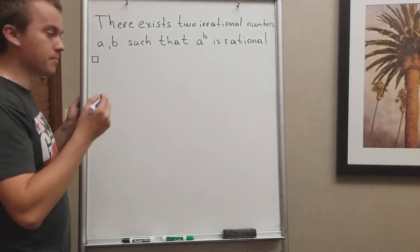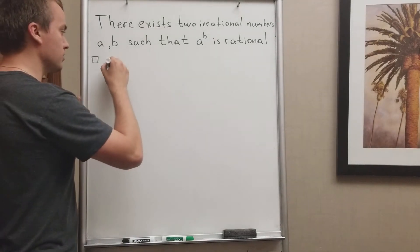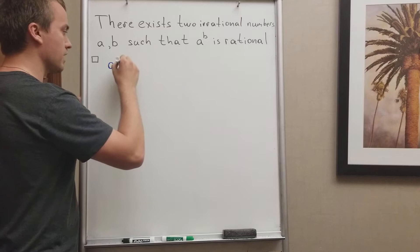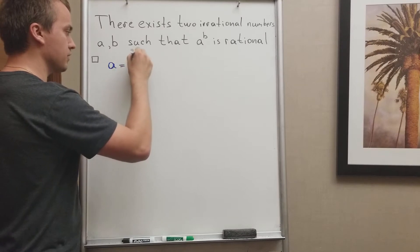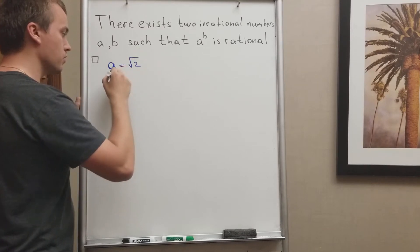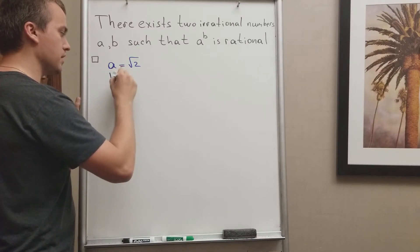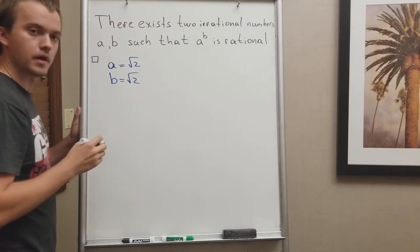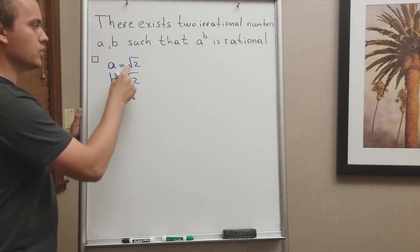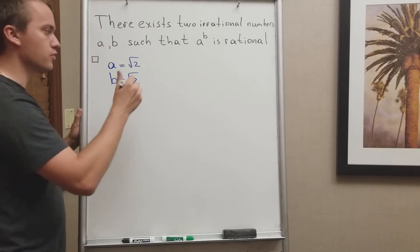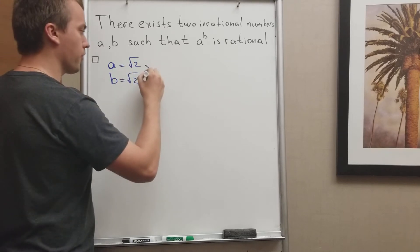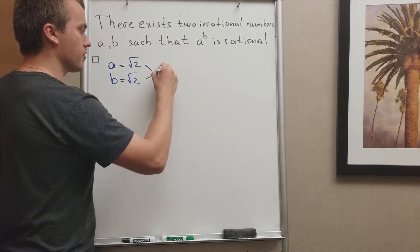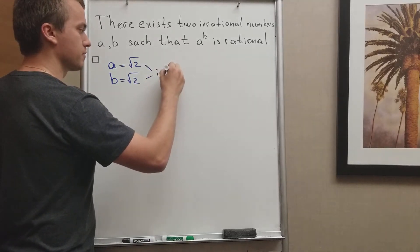One of the examples I'm going to use: let's take a to be equal to square root of 2 and b equal to square root of 2. You know that square root of 2 in both cases are irrational numbers.